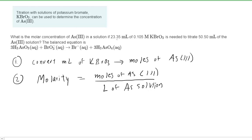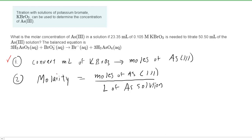So it's a two-step method, and in order to accomplish step one, we're going to follow a sort of roadmap that allows us to convert the milliliters of the KBrO3 into moles of the arsenic ion. Let's take a look at that roadmap.